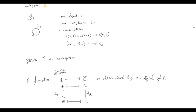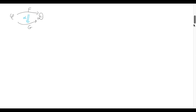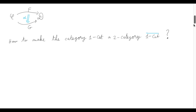How does that relate to our general problem? We are given two categories C and D, and two functors F and G between them, and we want to define a natural transformation. Said otherwise, we can ask how we can turn this category 1-Cat of categories and functors into a two-category, call it 1-Cat-bar. Being a two-category allows us to have those arrows between arrows — a two-dimensional surface between the one-dimensional objects F and G.